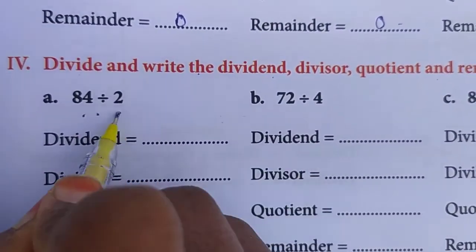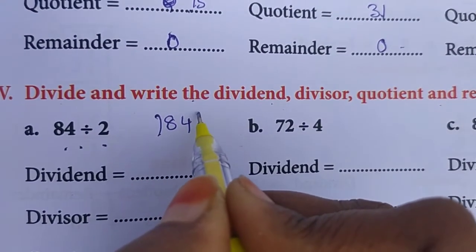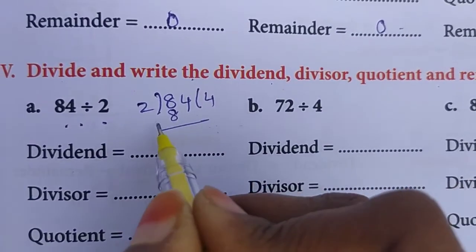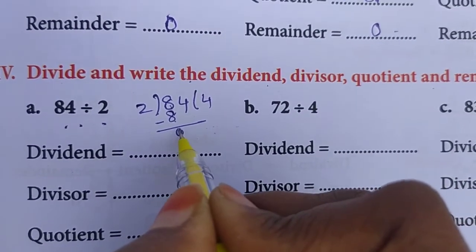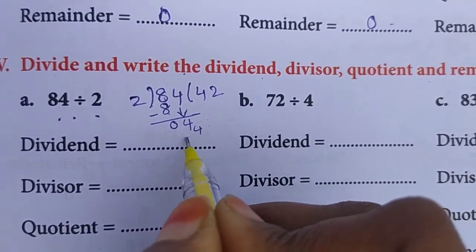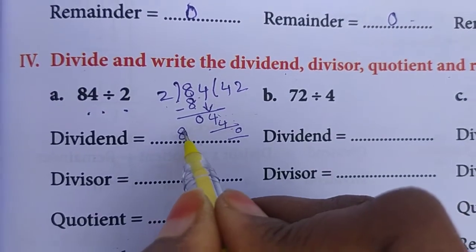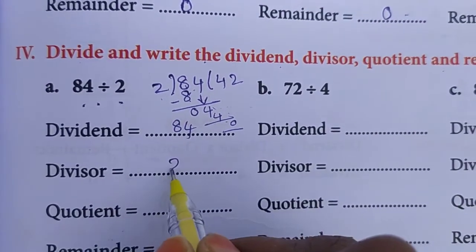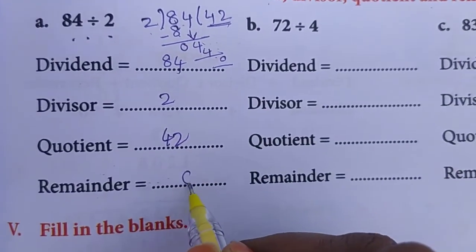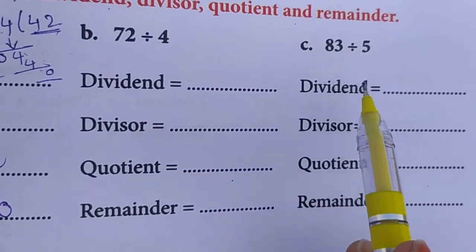84 divided by 2. 2 fours are 8, 2 twos are 4, 0. What is the dividend? 84. Divisor is 2. Quotient is 42. Remainder is 0. These questions you solve by yourself.